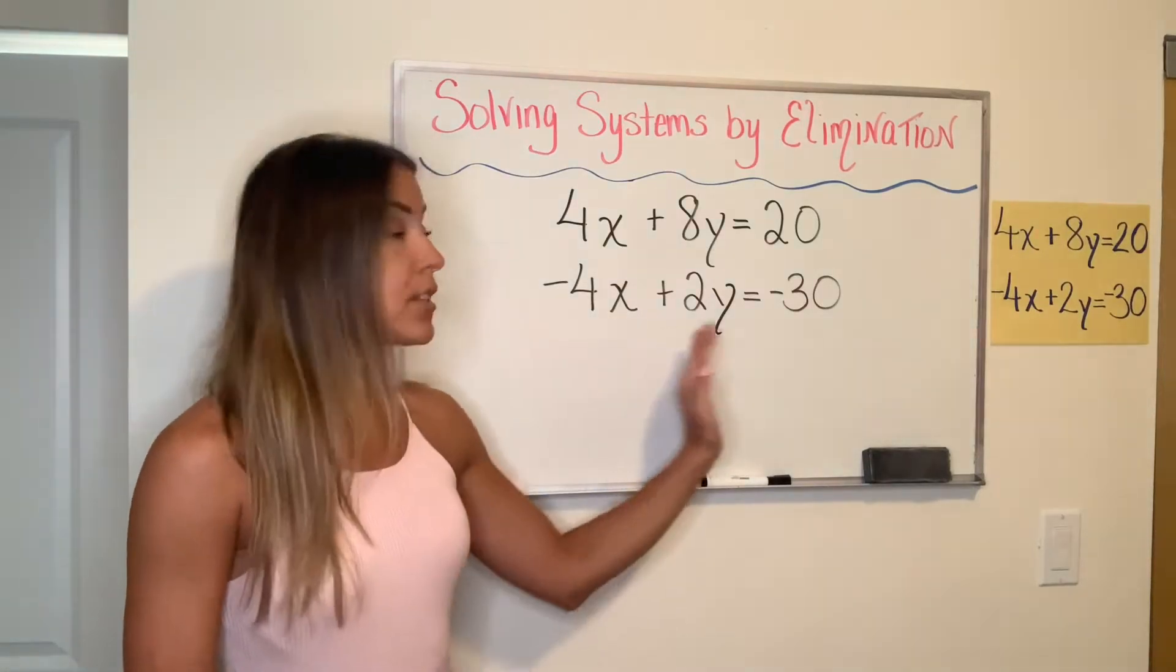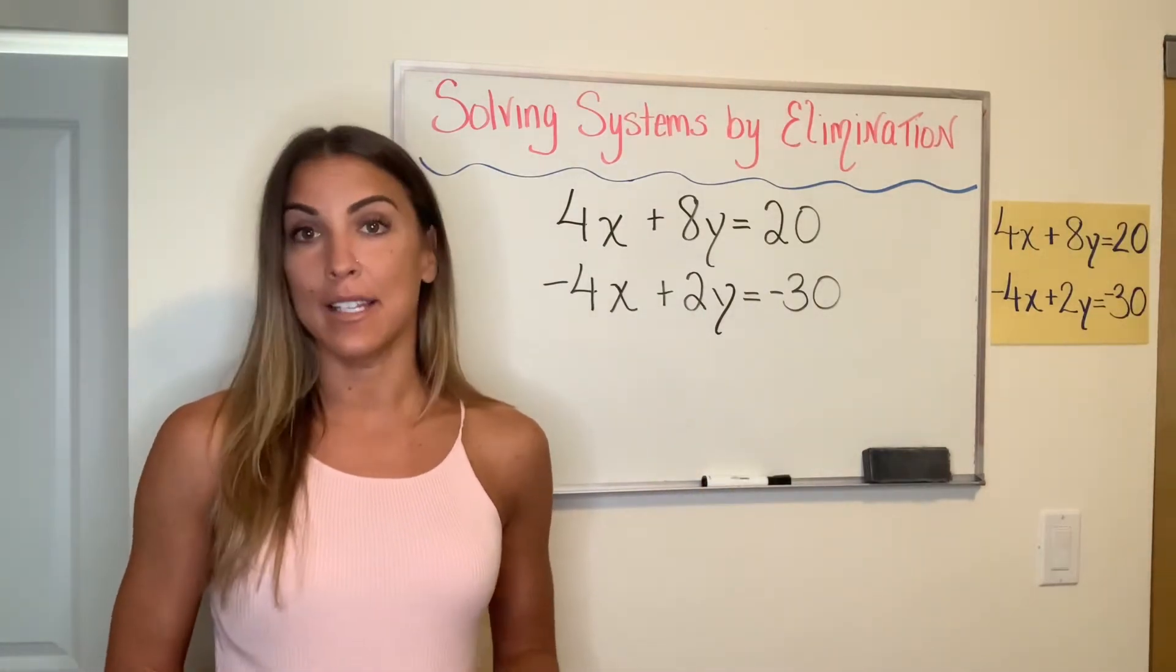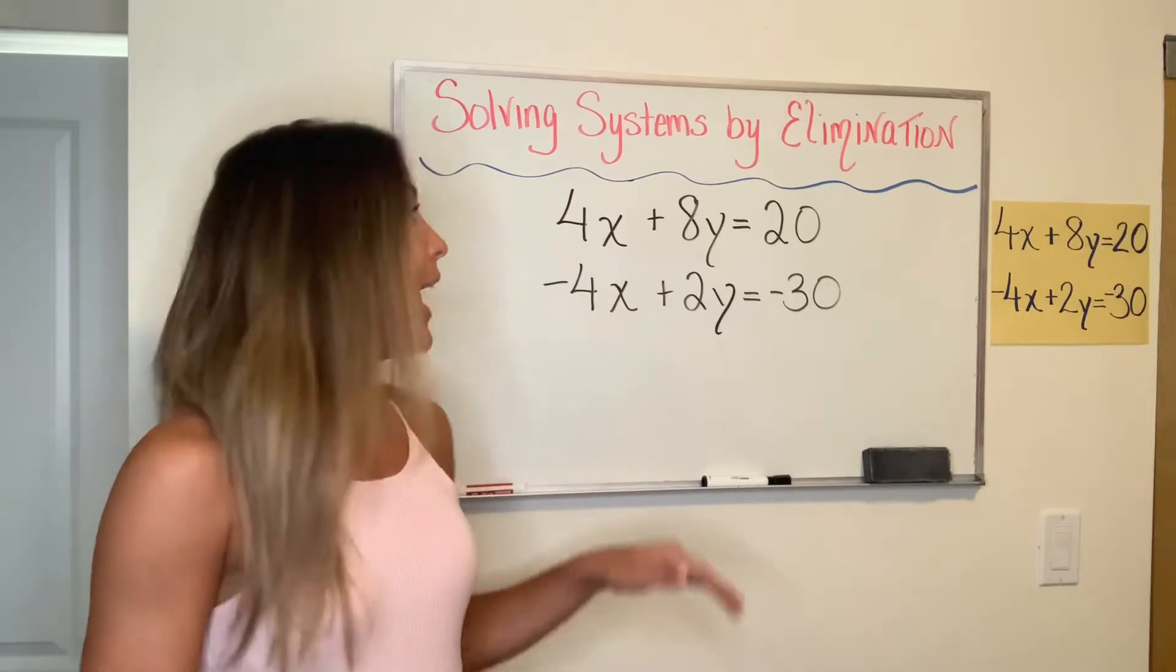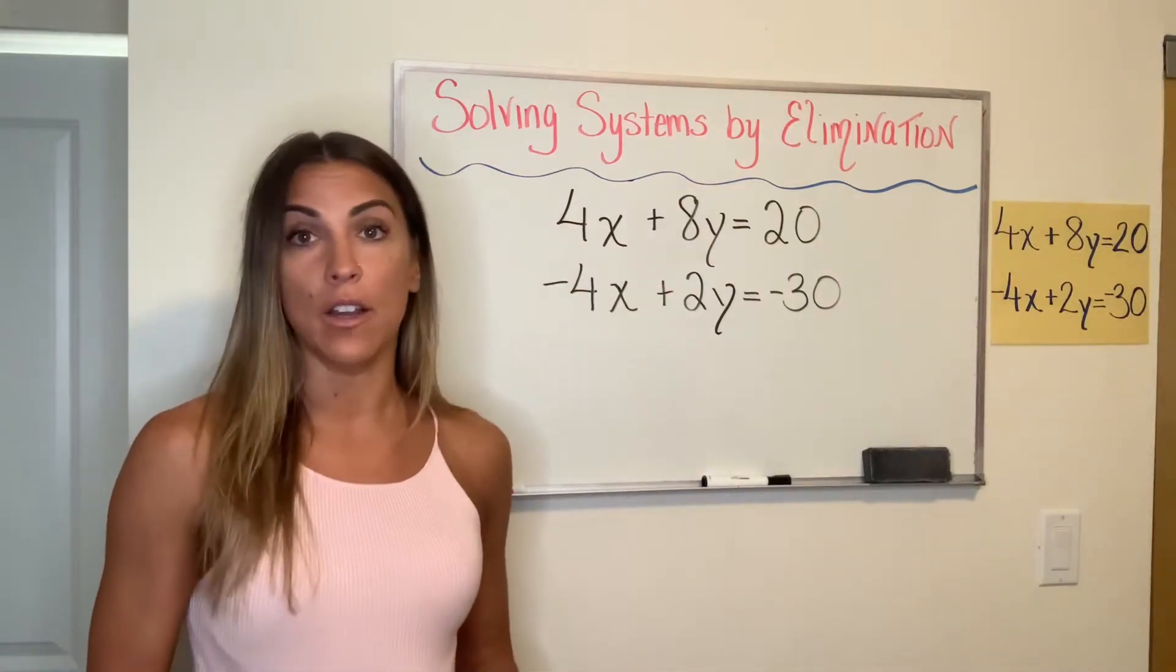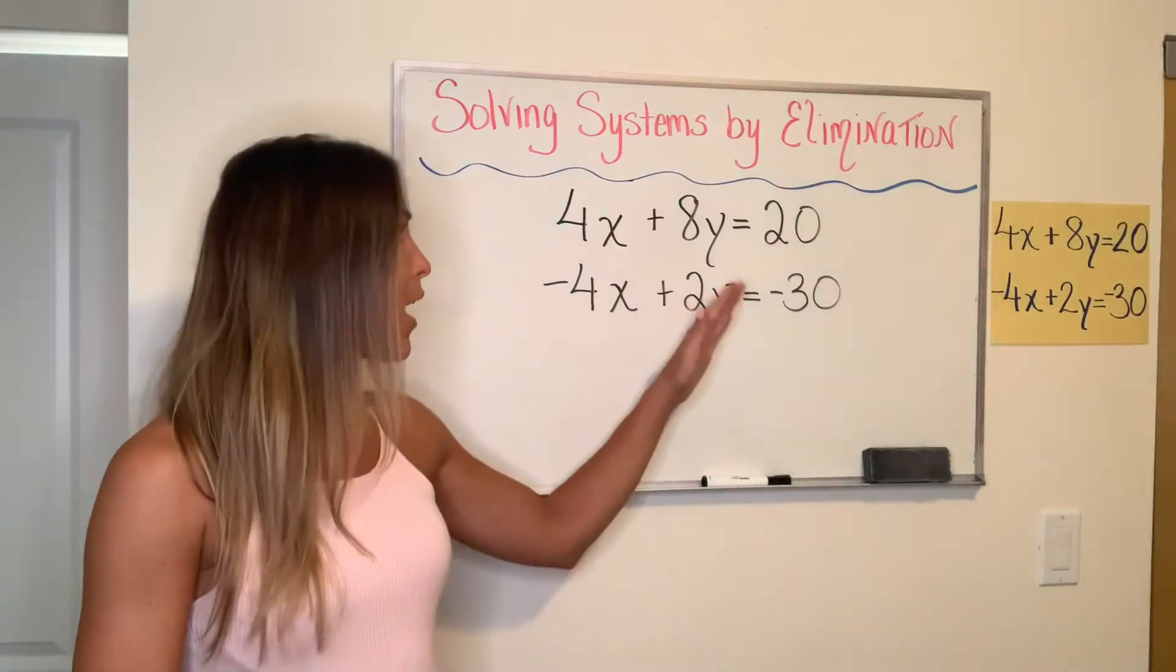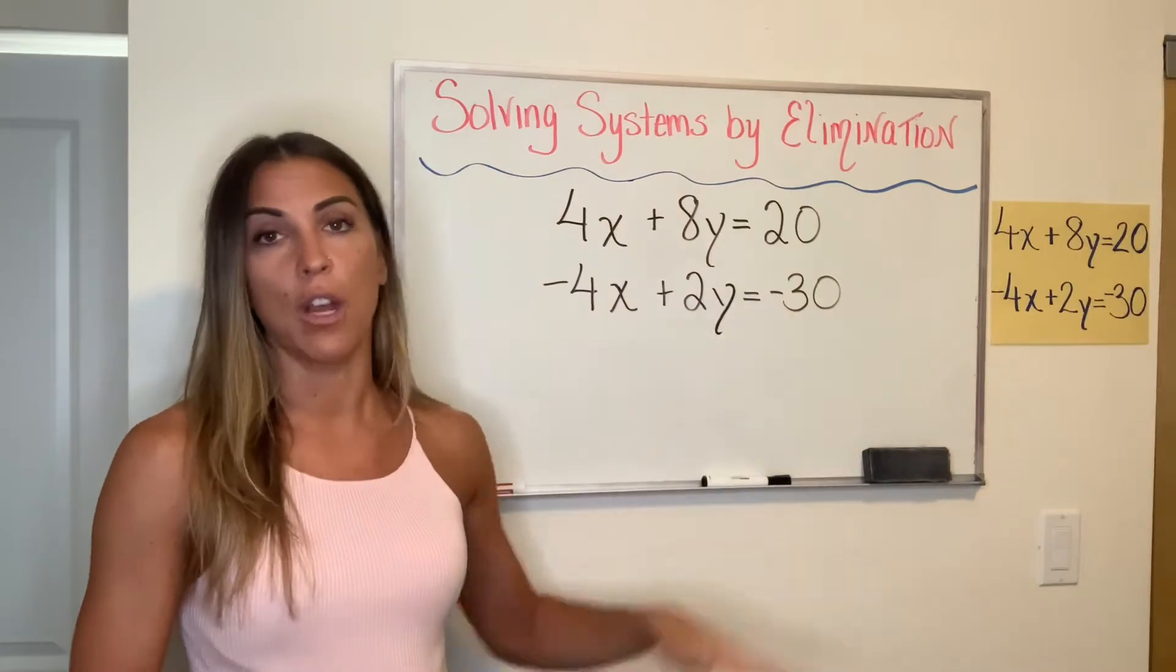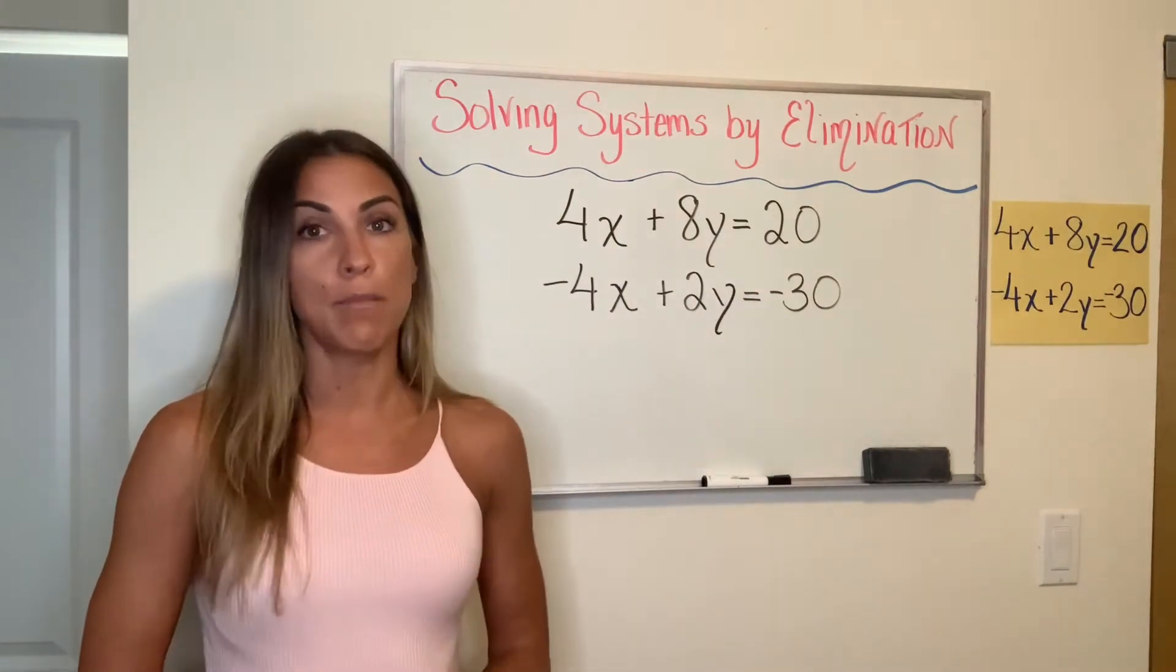So I could solve this system using substitution. But as you know, one of the variables has to be isolated for me to do substitution. In this example, neither variable in neither equation is isolated. So I'd really have to do some work to get one of these variables by itself. I'd have to subtract, I'd also have to divide by the coefficient. So this method of elimination or linear combination is going to be much easier for me.